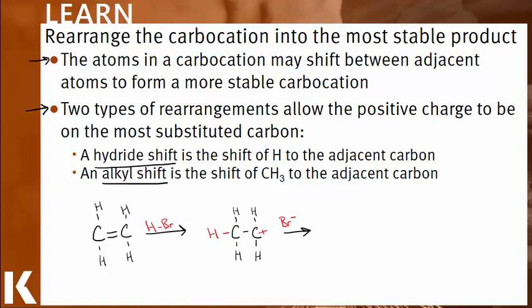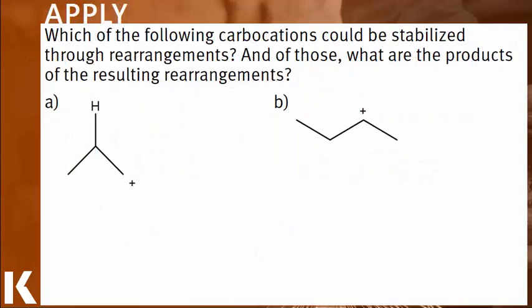Let's take a look at some questions so we can use these concepts to rearrange a carbocation into its most stable formation. In A, we want to gauge the current stability of the carbocation. Carbocations are stabilized by neighboring carbons. We use the term primary, secondary, and tertiary to describe the number of carbons bonded to the carbon with a positive charge. And stability increases as the number of neighboring carbons increases.